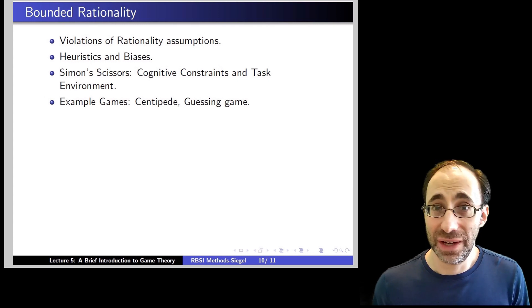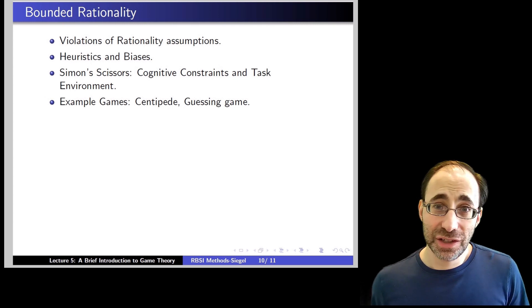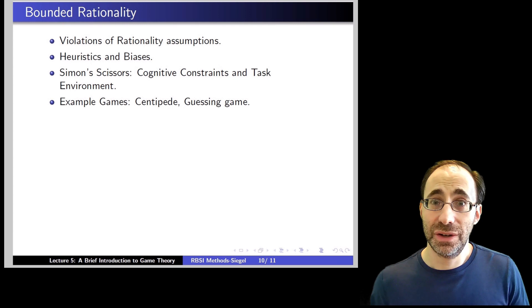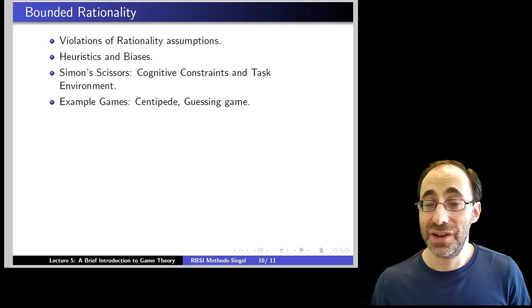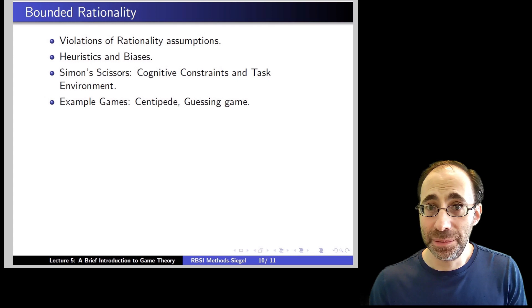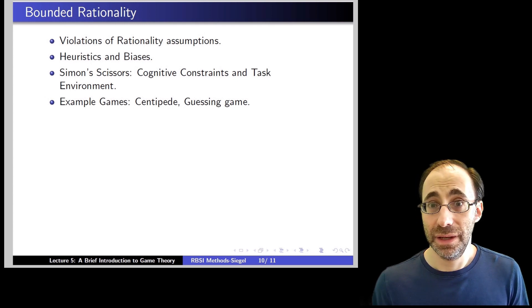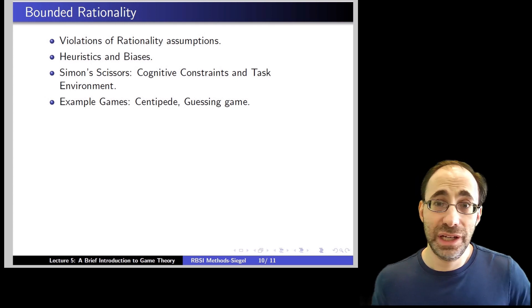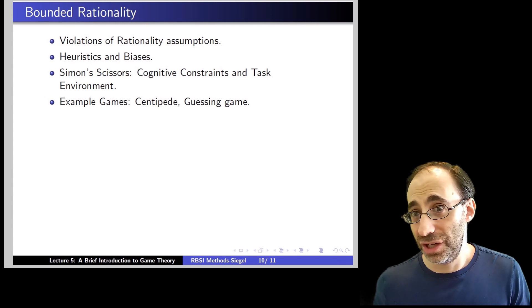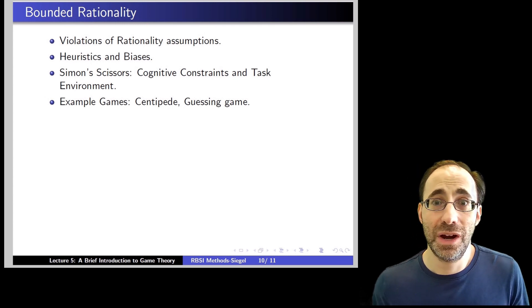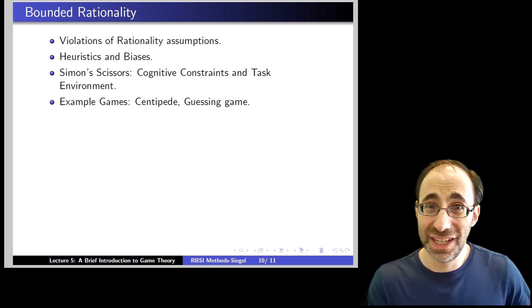The first is cognitive constraints. A cognitive constraint just means you don't have the time or interest to put in the effort and thought, the cognition, level of cognition, to really work out the optimal decision to a problem. That could be because it's just too hard and you don't want to bother, like chess or go, or it could be because you just don't want to put the time in because you have other things you want to do, like the cereal example.